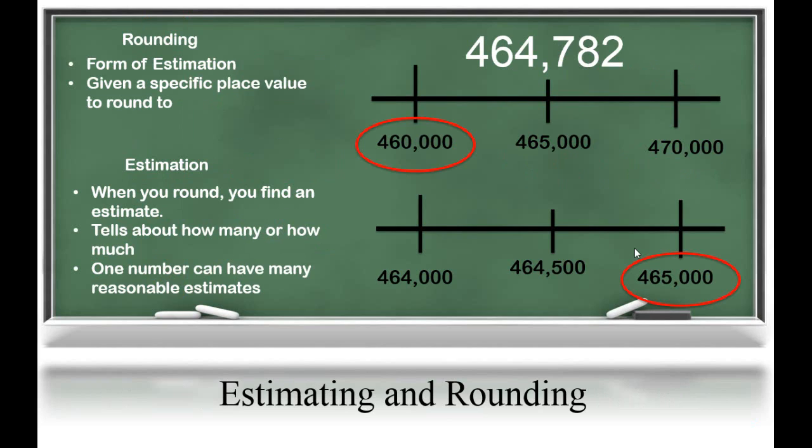Now, students are going to take their knowledge of place value and apply it when estimating and rounding. Rounding is a form of estimation where you can come up with multiple estimates for one number. Let's look at how we would round the number 464,782.